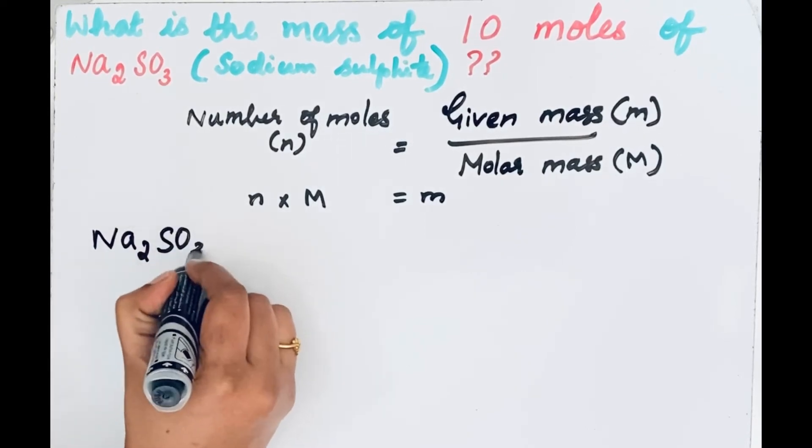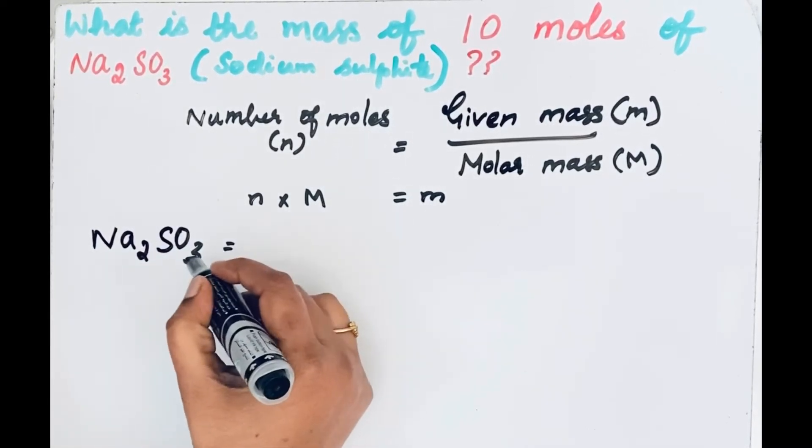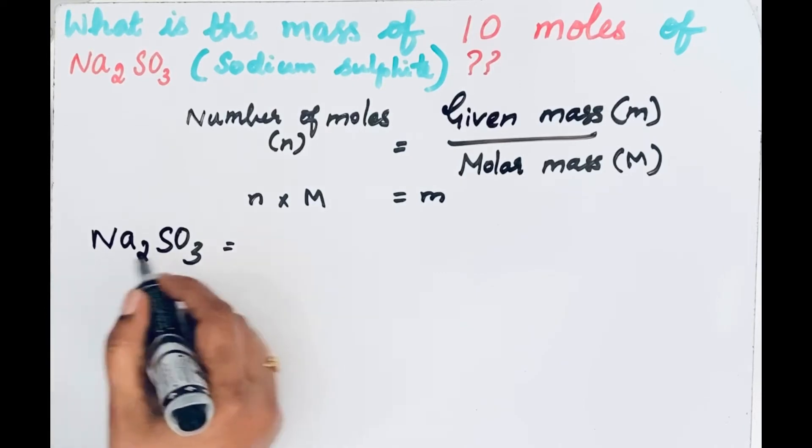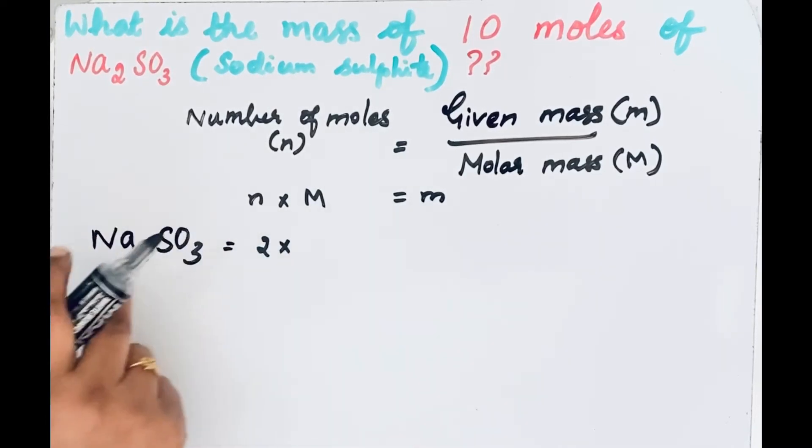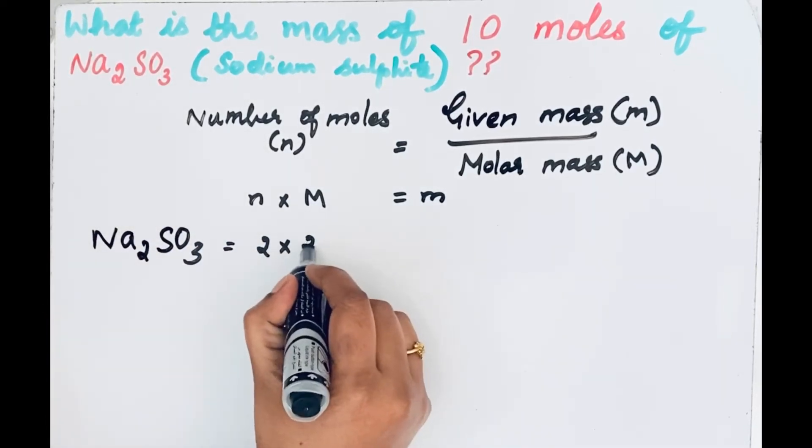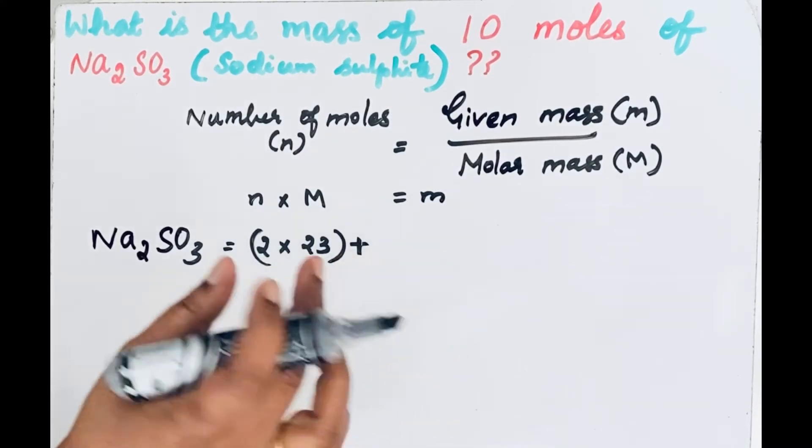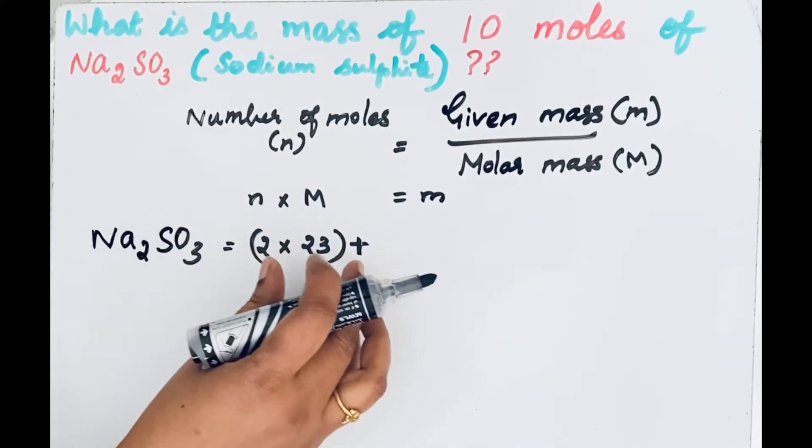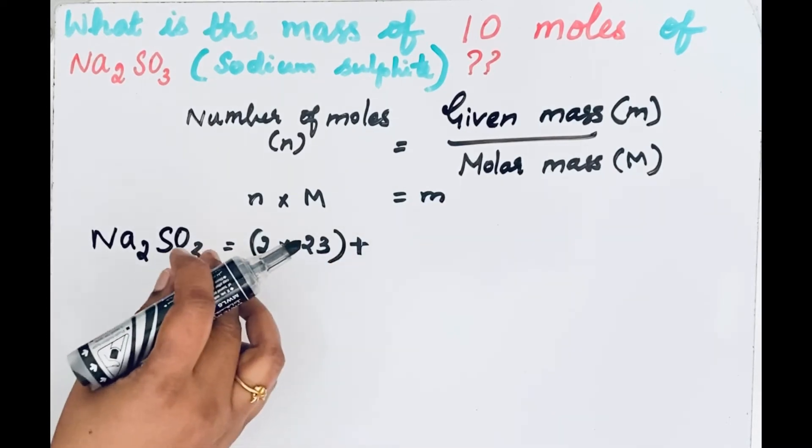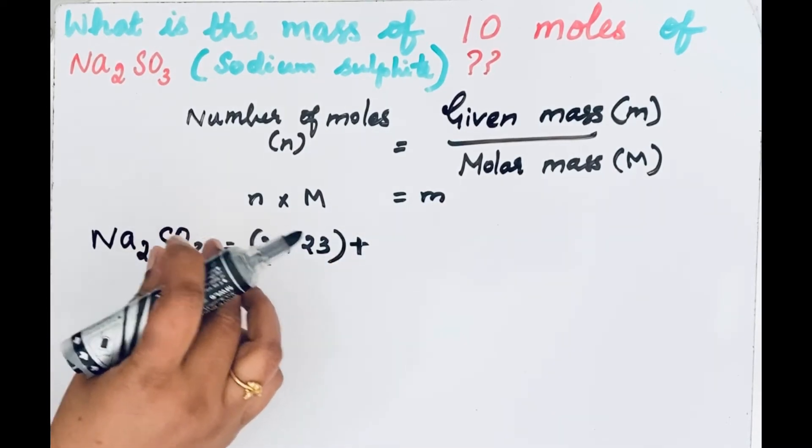Na2SO3. There are two sodium atoms, so 2 times - what is the atomic mass of sodium? 23. Plus, remember children, you should learn atomic mass of first 20 periodic table elements.